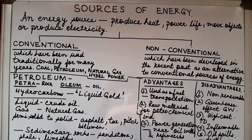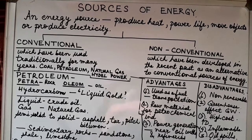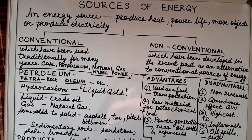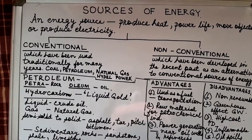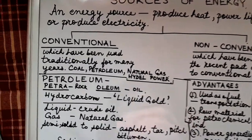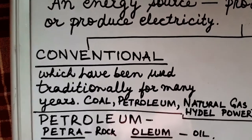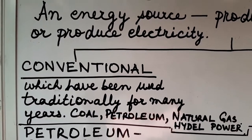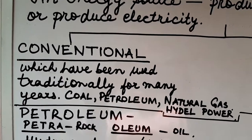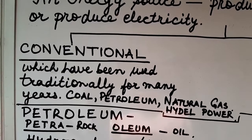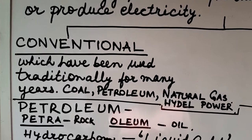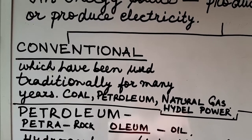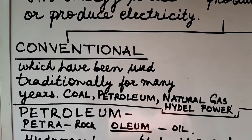Conventional sources of energy are those sources which have been used traditionally for many years. These are coal, petroleum, natural gas, and hydel power. Among these, coal, petroleum, and natural gas are non-renewable and exhaustible sources of energy, and they also cause pollution.